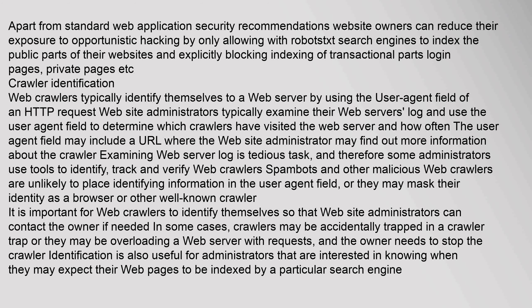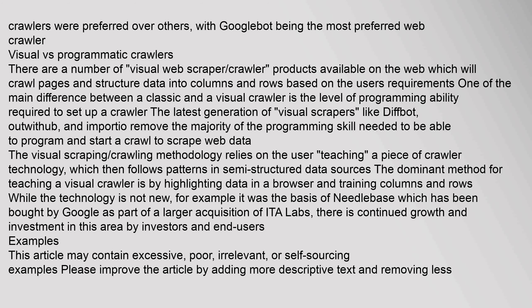There are a number of visual web scraper and crawler products available on the web which will crawl pages and structure data into columns and rows based on the user's requirements. One of the main differences between a classic and a visual crawler is the level of programming ability required to set it up. The latest generation of visual scrapers — like Diffbot, OutWitHub, and Import.io — remove the majority of the programming skill needed to start a crawl. The visual scraping methodology relies on the user teaching a piece of crawler technology, which then follows patterns in semi-structured data sources by highlighting data in a browser and training columns and rows.